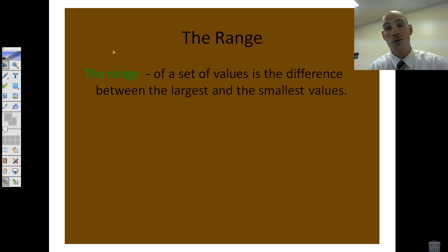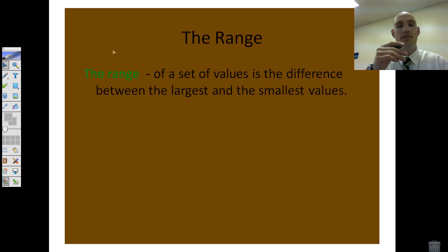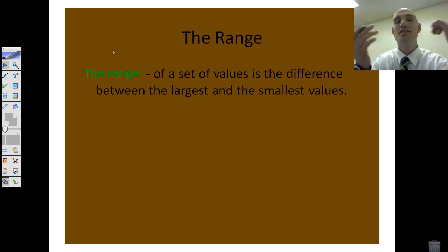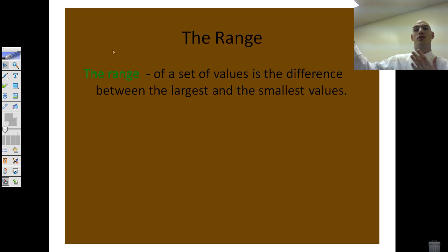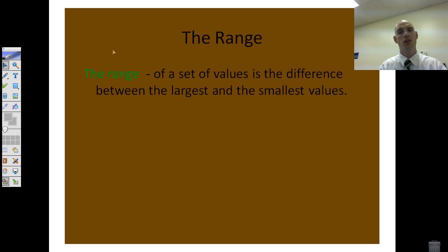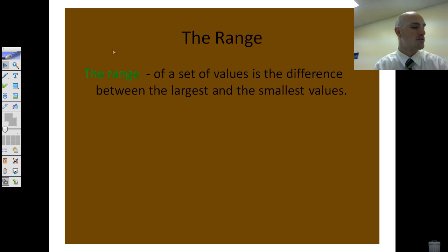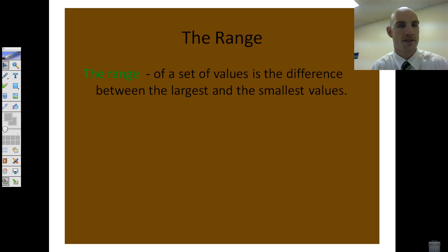First is the range. The range of a set of values is the difference between the largest and the smallest values. This is not really a big surprise. So if one game you scored 2 points and another game you scored 36 points, the range is the difference between the largest and the smallest values. Let's go straight into looking at an example.